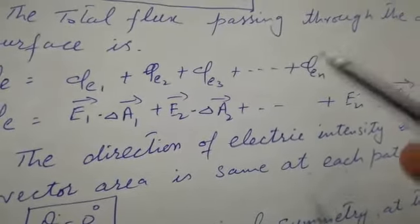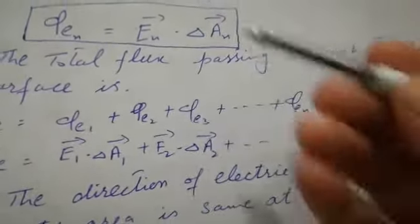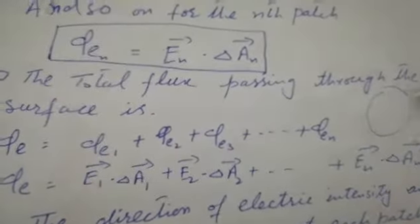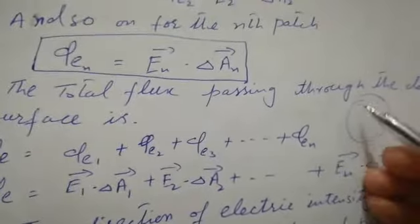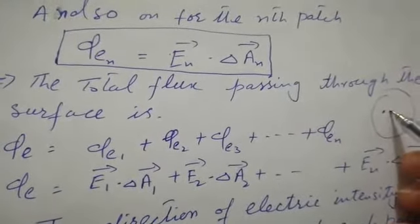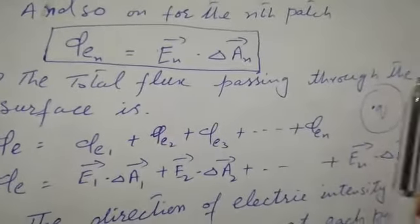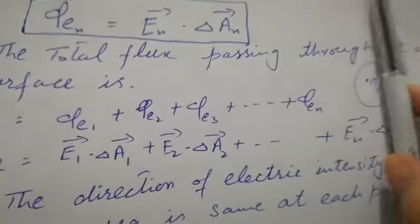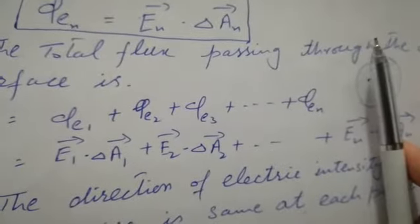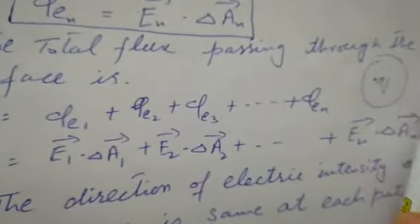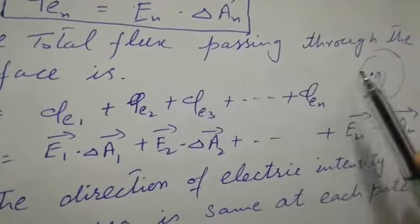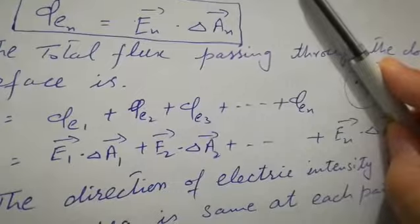The vector area of the sphere is always normal to the surface at every patch — here it is normal, here it is normal, everywhere it is normal. If the charge is placed at the center, then the vector area is in the outward direction at each patch, and the electric intensity is also in the outward direction. So E and the vector area A are parallel at each patch.